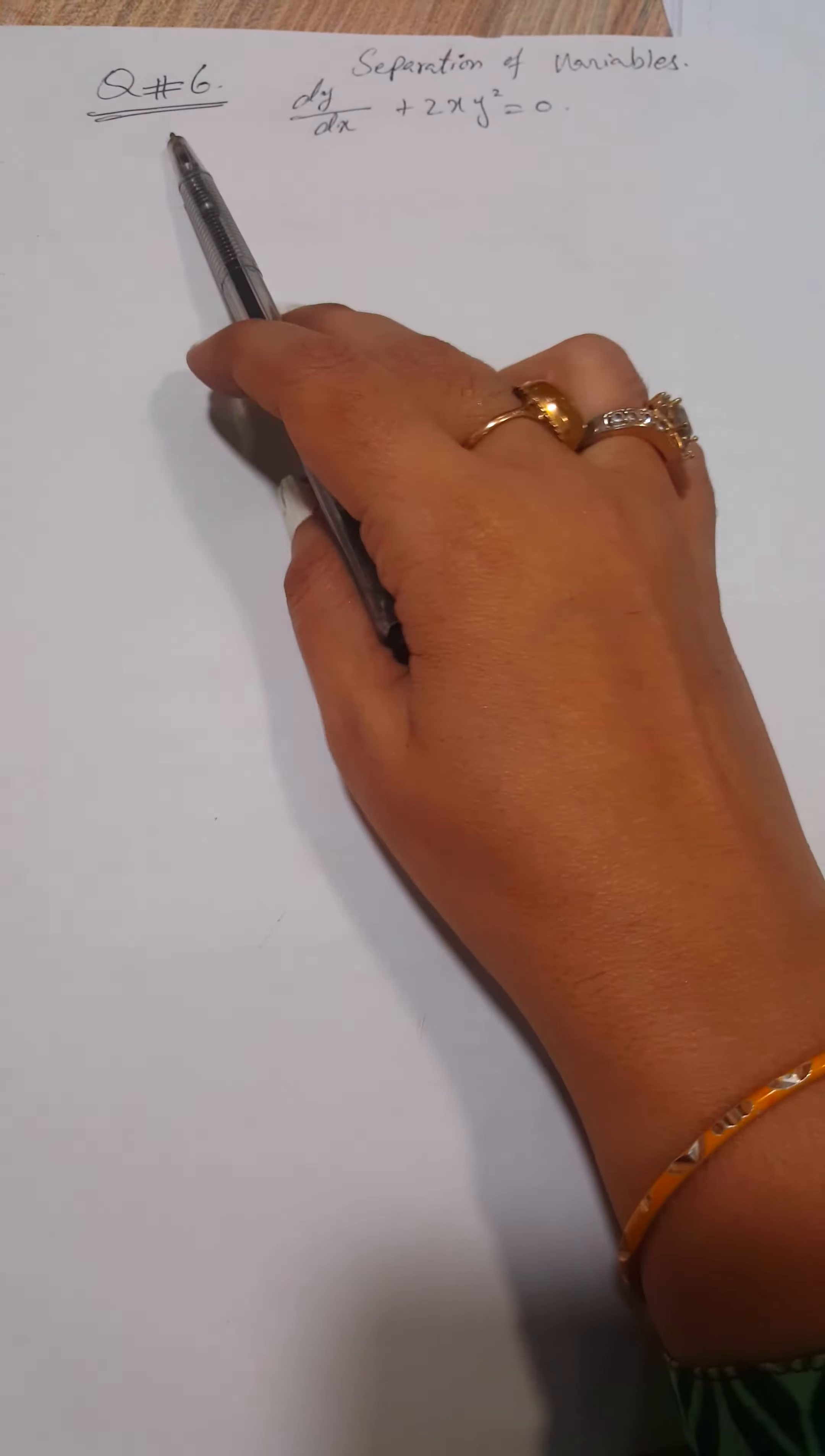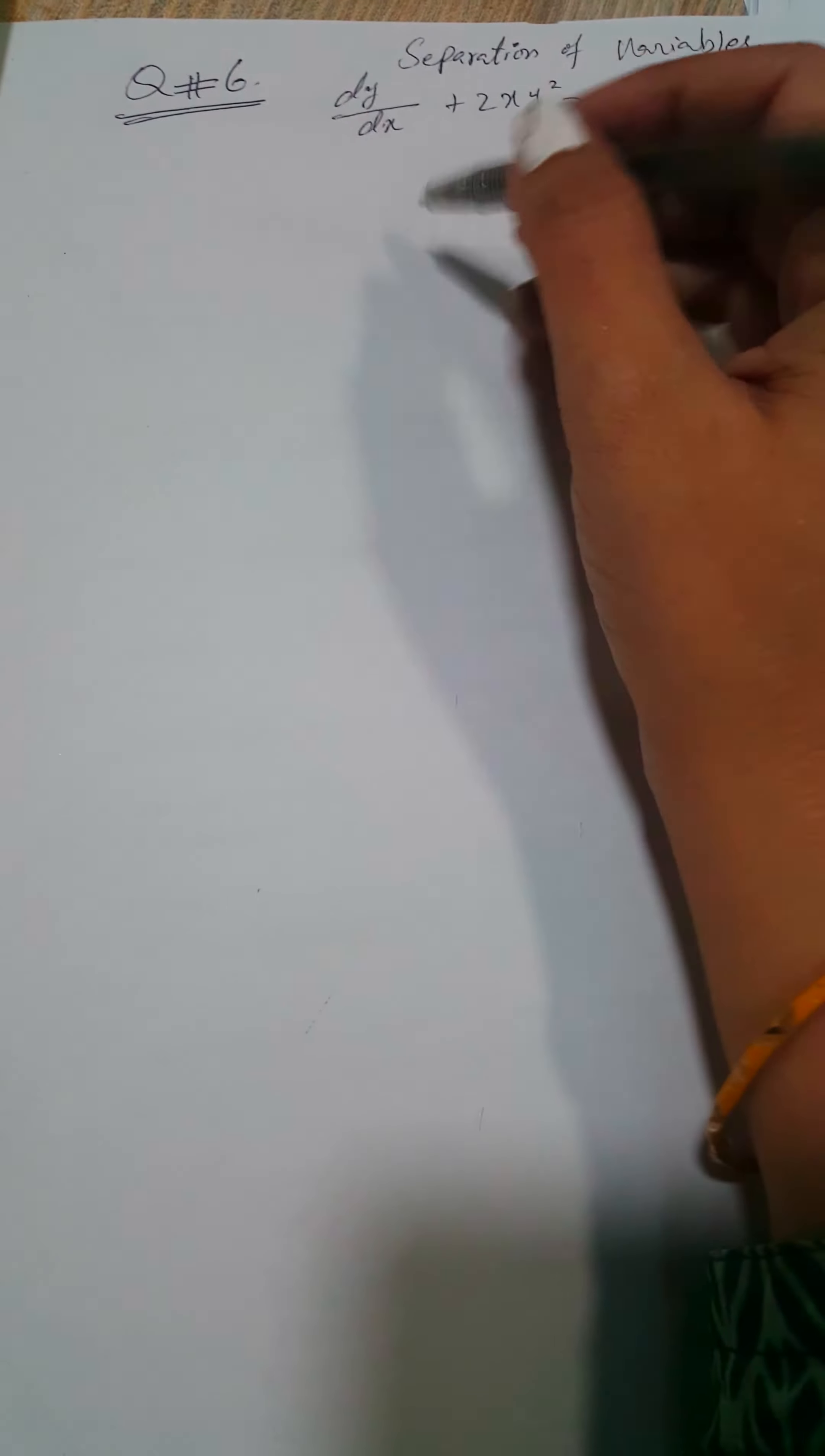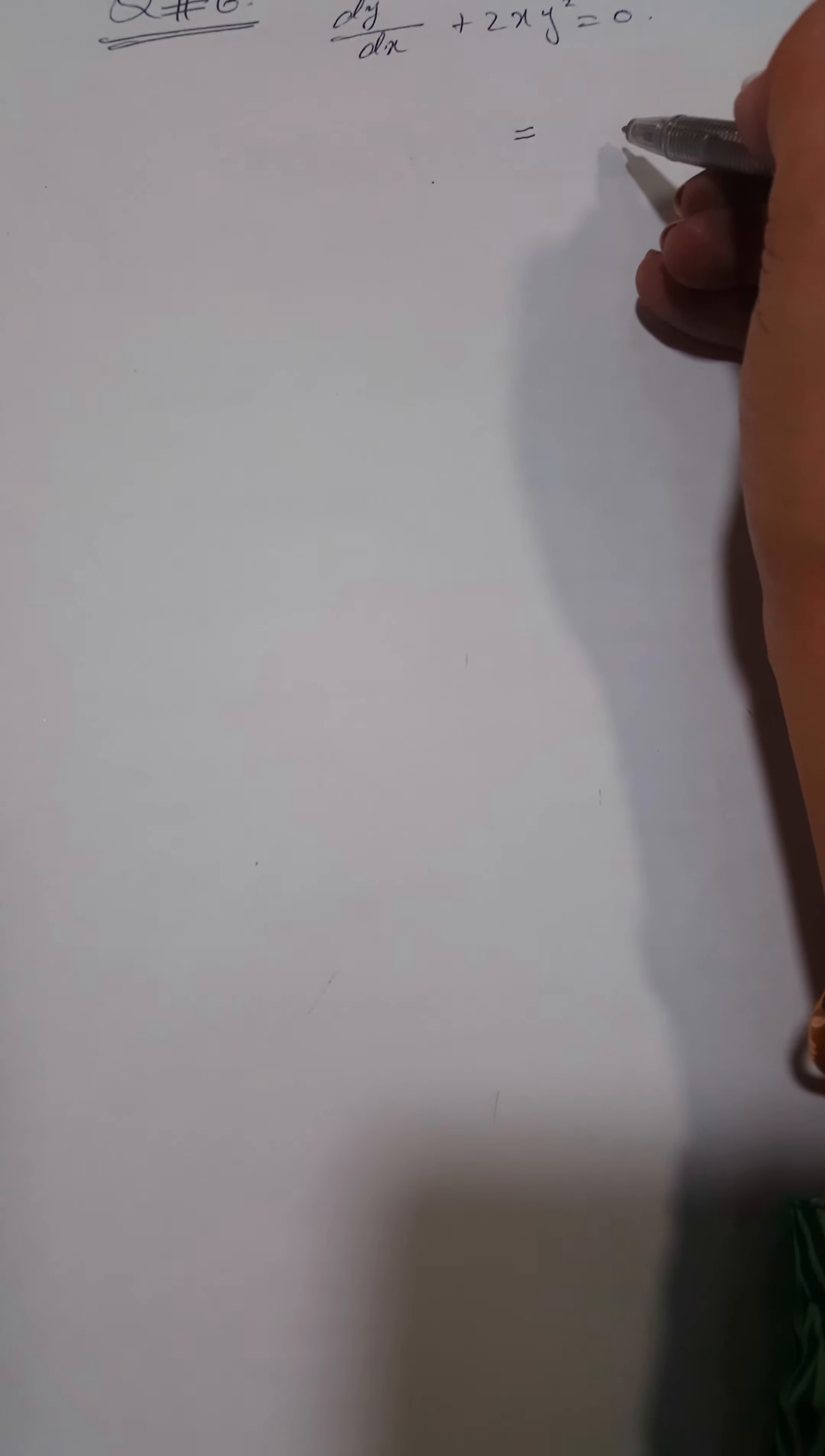Question number six is here: dy/dx + 2xy² = 0. First of all, I have to separate the variables. The y variable should be on the left side and the variable x should be on the right side.